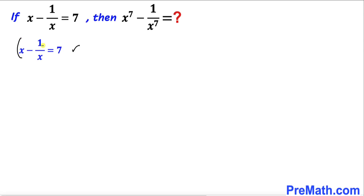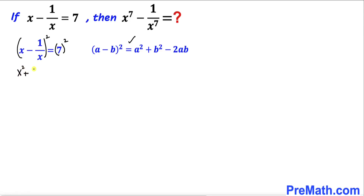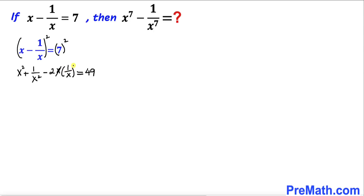Let's take a square on both sides of this equation. Recalling the identity: (a - b)² = a² + b² - 2ab, and applying it to the left hand side, we get x² + 1/x² - 2·x·(1/x) = 7² = 49. The x and 1/x cancel, so we have x² + 1/x² - 2 = 49.